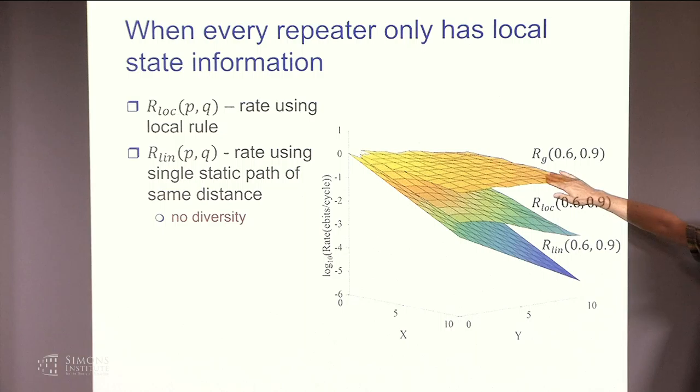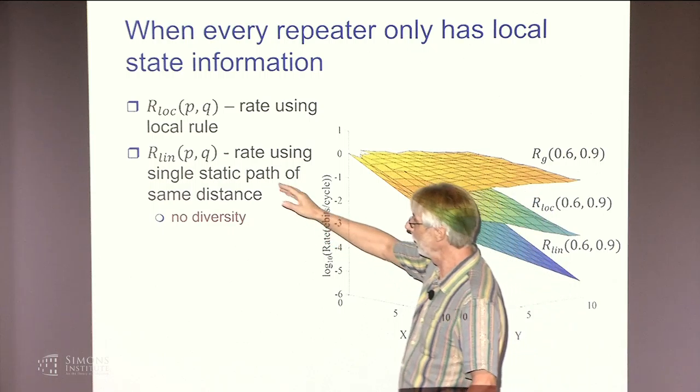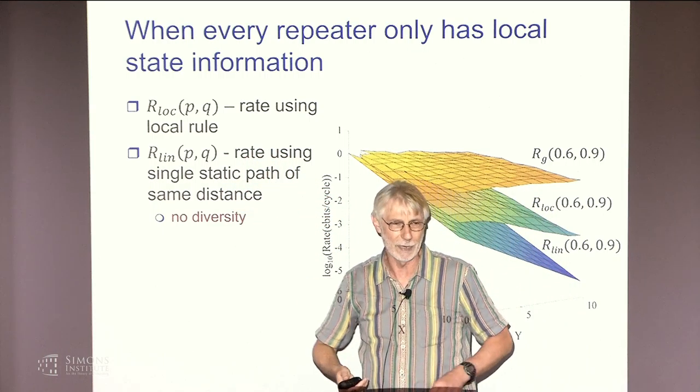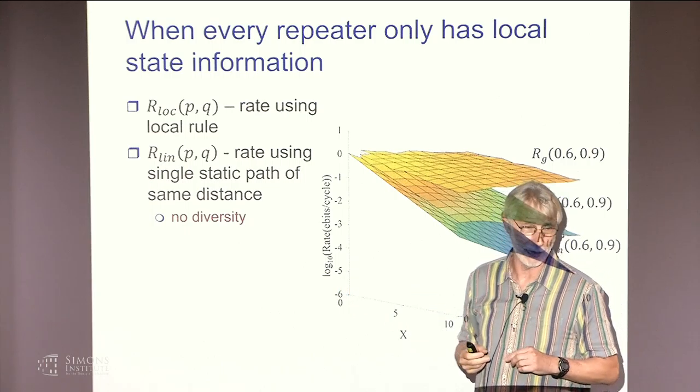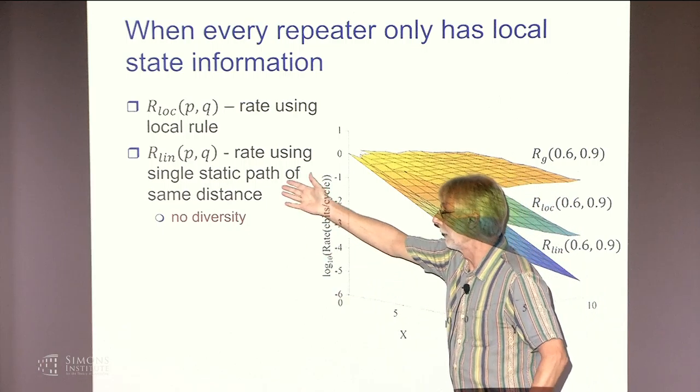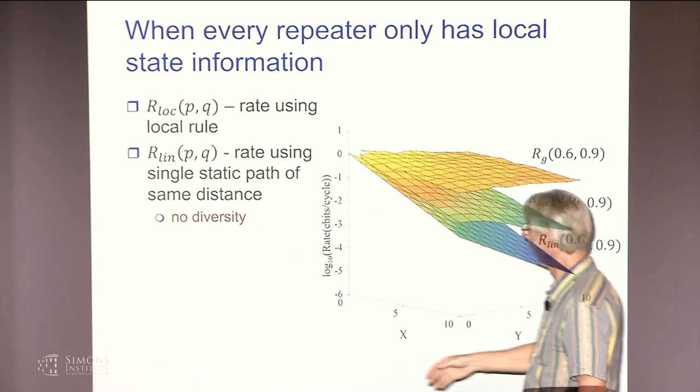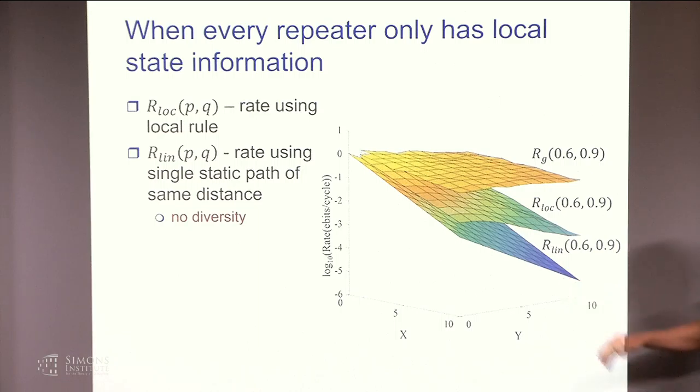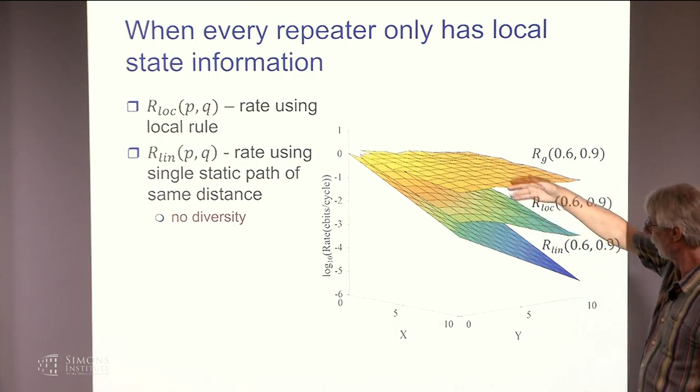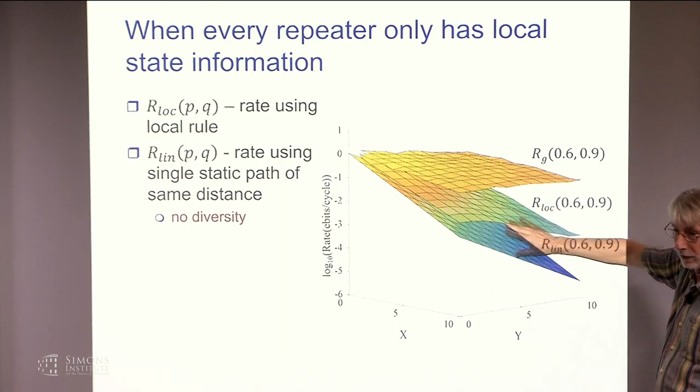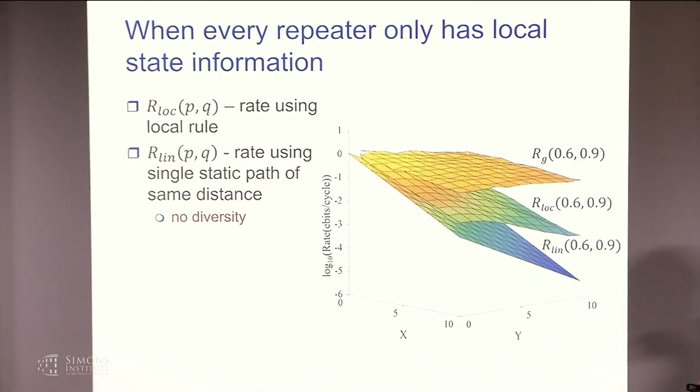And here I'm showing you the rate for the greedy algorithm. Here's what you get if you use this local rule. And then what we're going to compare against is the rate that you would get if you had decided to just allocate single static paths between Alice and Bob. And let's say, and so this is of the same distance, in which case you have no diversity here. And that's the this curve, this surface right here. And you notice that both of them have an exponential decay, but the decay is much faster for the linear. And so you're getting benefit from allowing this diversity.